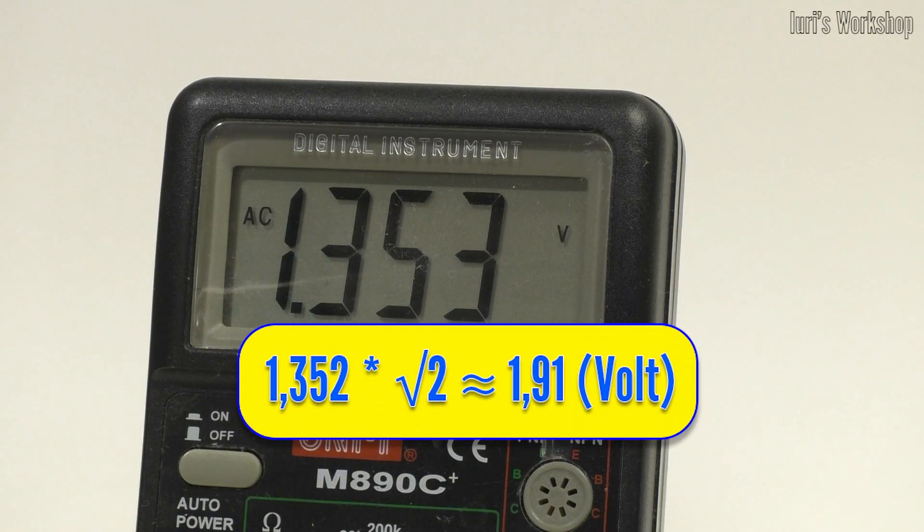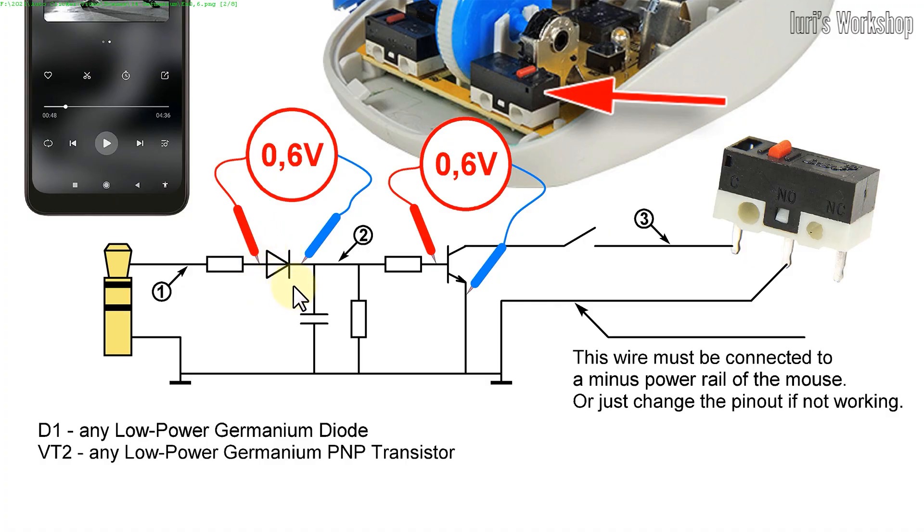And if the signal amplitude exceeds 2 volts, you can safely use any low-power silicon diode and the same transistor. There will be 0.6 volts drop on each of them.